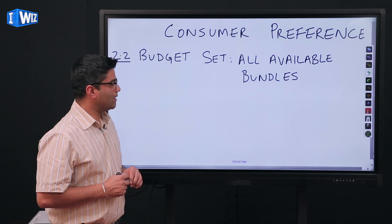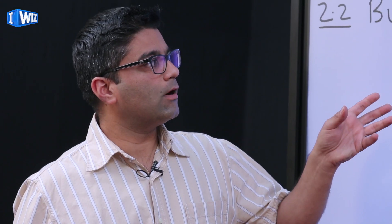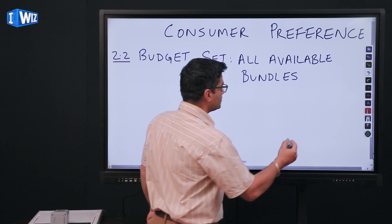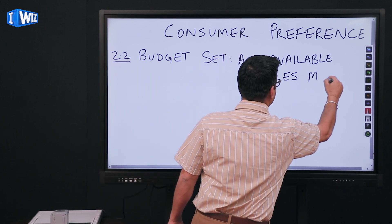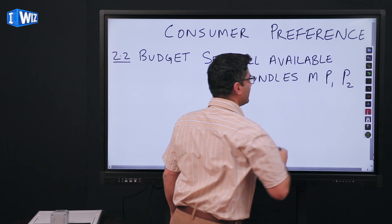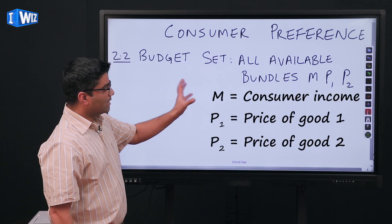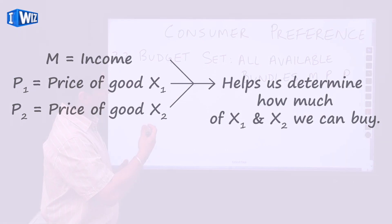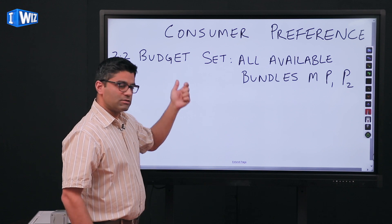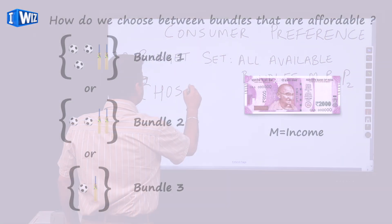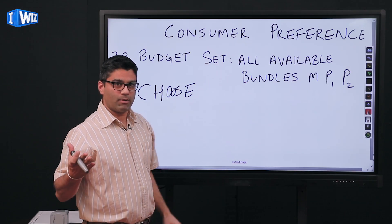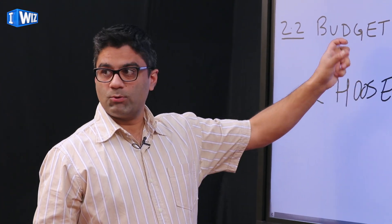Let's get back to the topic of consumer behavior. In the last few lectures we talked about the budget set — what we can afford to buy given three parameters: price of good one, price of good two, and income. That covers all the affordable bundles. Now in the next topic we're going to talk about consumer preferences — how do we choose which bundle we prefer over another.